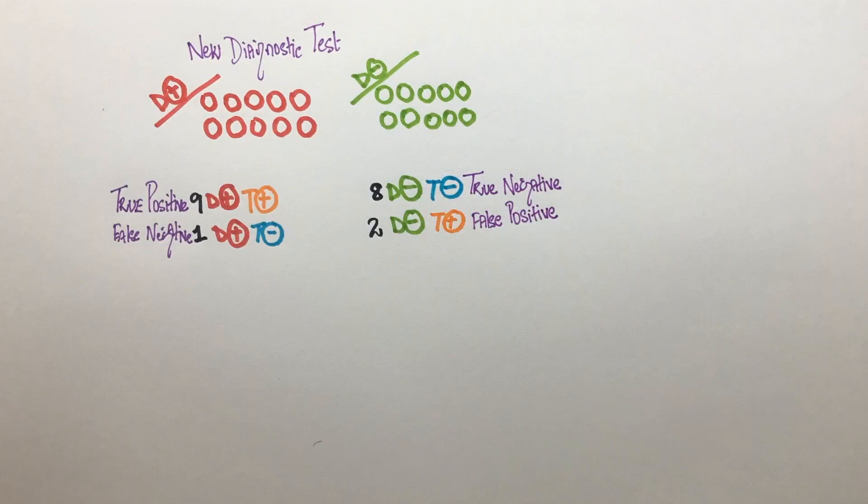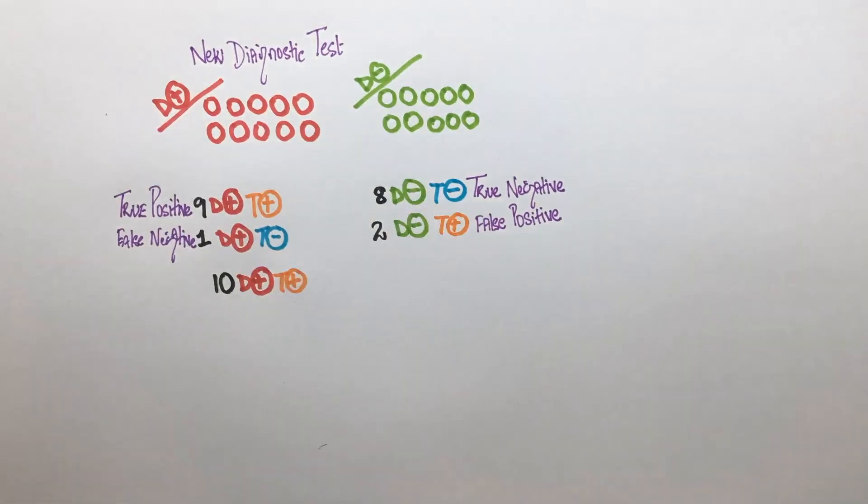Ideally, a test should identify everyone with the disease as positive and everyone who doesn't have the disease as negative. Unfortunately, this isn't always the case. So, we can decide how good a test is by looking at the sensitivity and specificity.